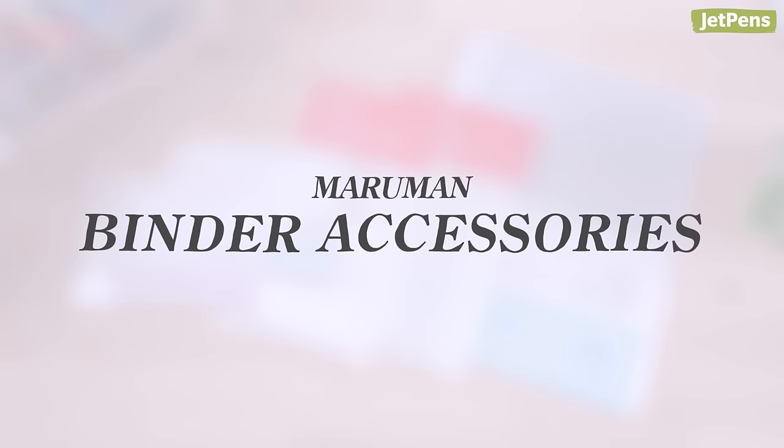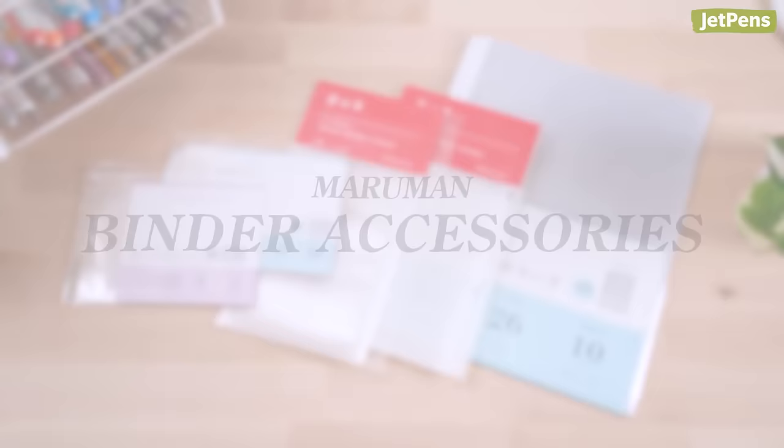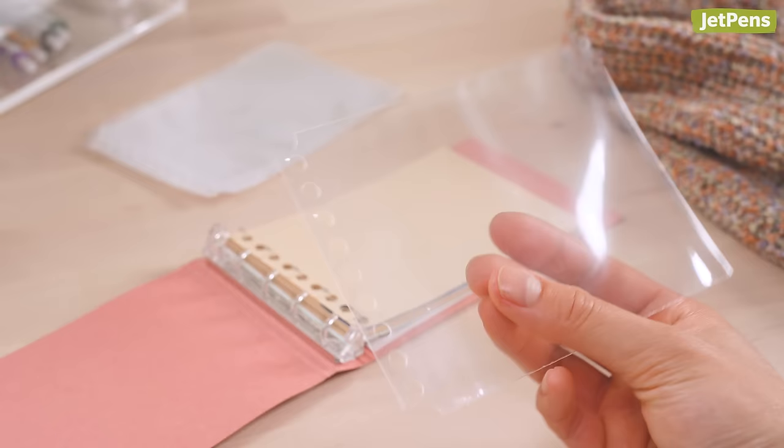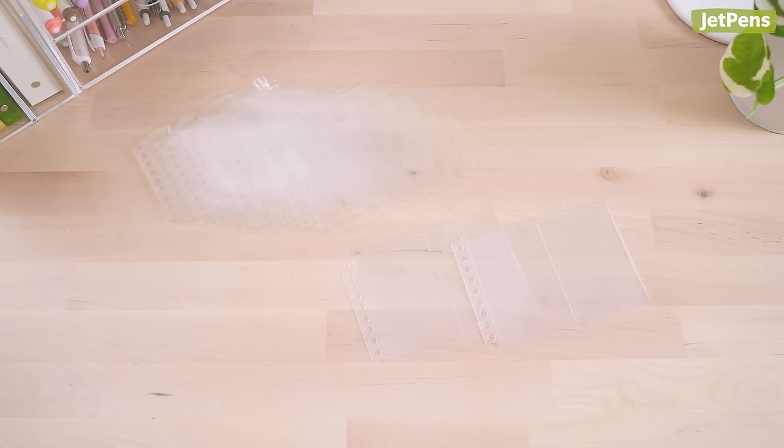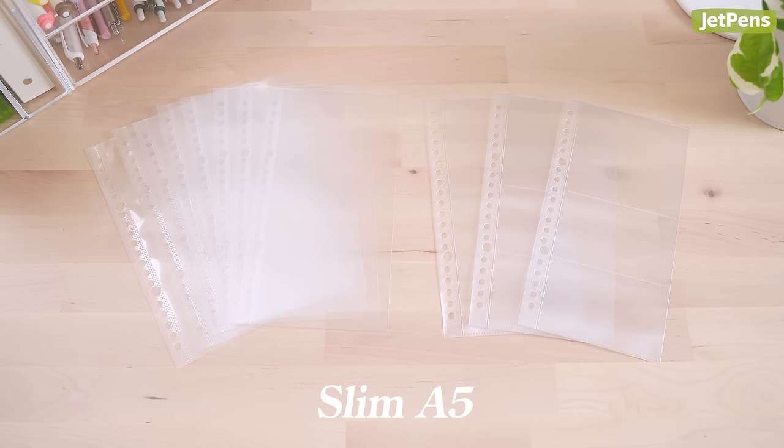Maruman Binder Accessories: Store business cards and loose sheets in your binder with these card pockets and sheet protectors. The sheet protectors are designed to fit hole-punched pages of the same size, so you don't have to fold them. They're available as B5, Mini B7 modified, and slim A5 sheets to fit the majority of Maruman's binders.